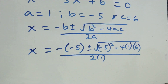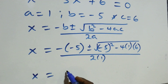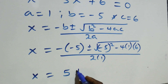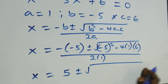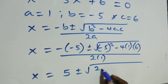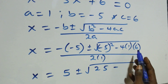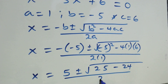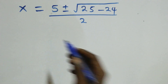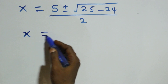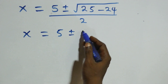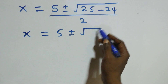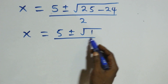Substituting the values, we get x equals five plus or minus square root of (minus five) squared minus four times one times six, all over two times one. This simplifies to x equals five plus or minus square root of twenty-five minus twenty-four, which is one, over two.